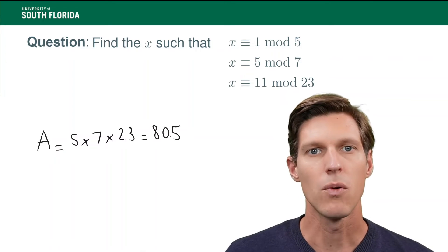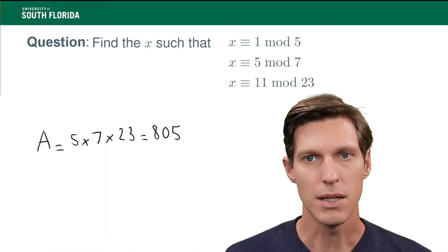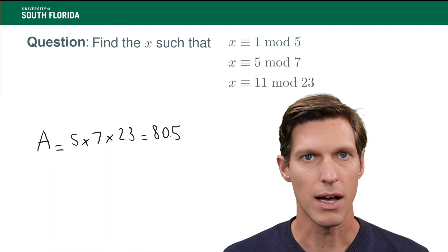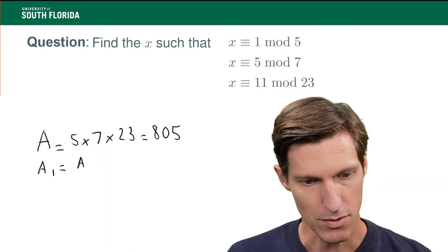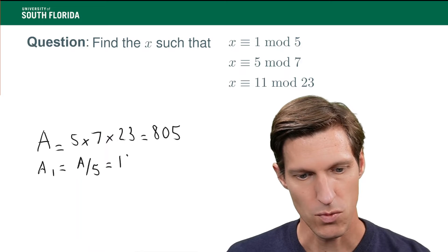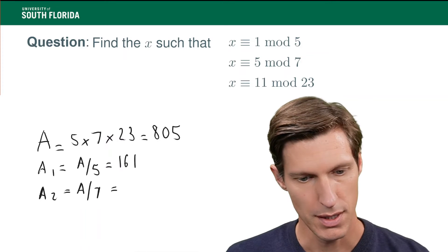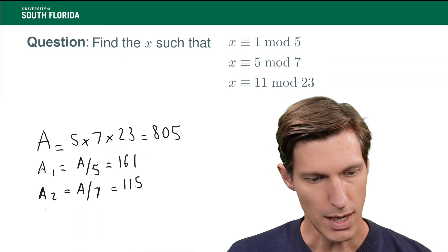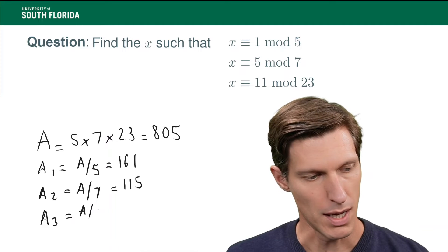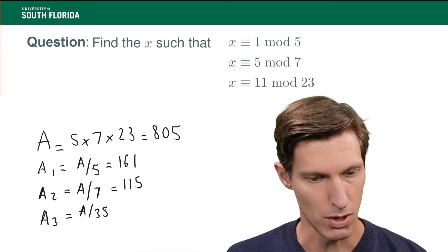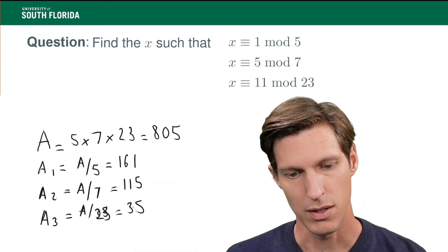Now, we calculate a1, a2, a3, which are the values that are a divided by respectively 5, 7, and 23. So, a1 is a divided by 5, and that's 161. A2 equals a divided by 7, and that's 115. And a3 is equal to a divided by 23—sorry, my bad—and that is 35.